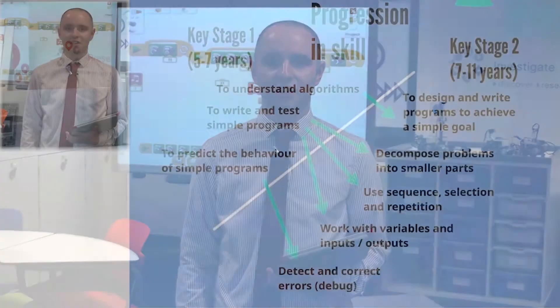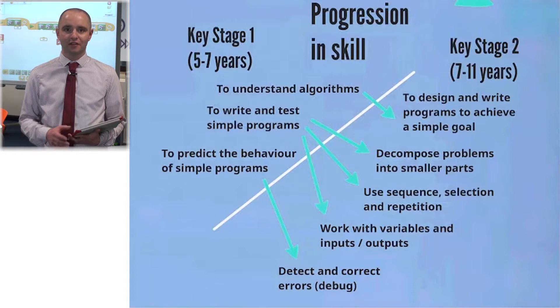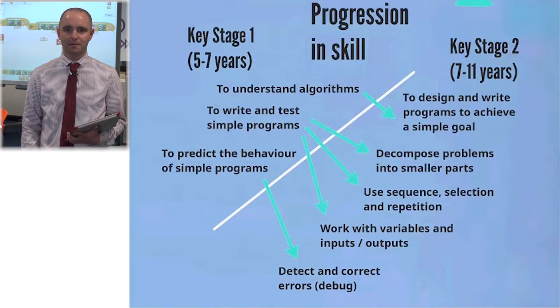Since September 2014, primary schools in England have been mandated to teach the new computing curriculum, which includes a number of elements related to computer programming. For example, from age five to seven years, pupils are required to sequence instructions and predict the behaviour of simple programs, while from seven to eleven years, pupils should know how to implement repetition, selection, and variables.